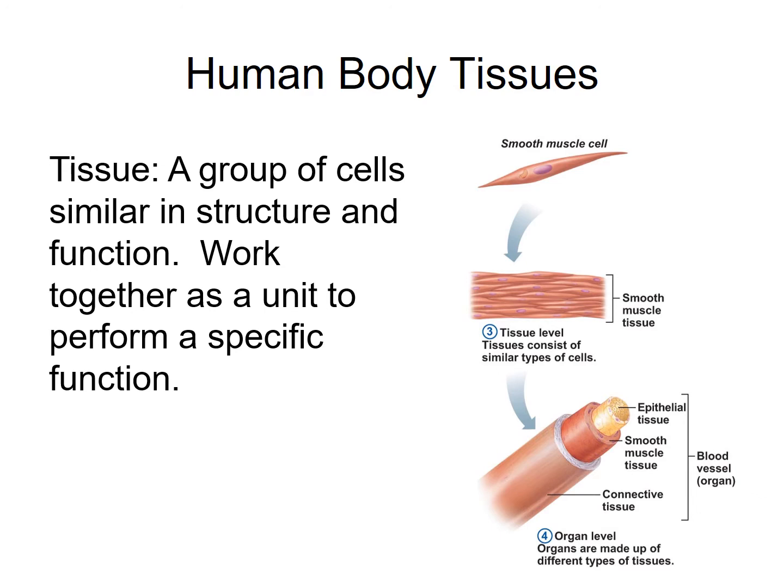For example, if we look at a blood vessel as shown here, its function is to allow the movement or flow of blood from one location to another. A blood vessel is composed of epithelial tissue, smooth muscle tissue, and connective tissue, each tissue having its own function. Epithelial tissue lines a blood vessel providing a low friction surface across which blood flows.